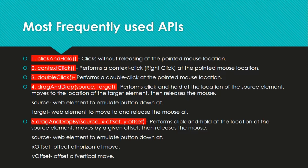Drag and drop takes a source and a target. The source is a web element, so we have to locate it using driver.findElement by ID, XPath, class name, or whatever. Similarly we have to find the location of the target and pass both to the drag and drop method — it will drag from the source element to the destination. Drag and drop by offset also takes the source element, plus an X offset for the horizontal axis and a Y offset for the vertical axis.